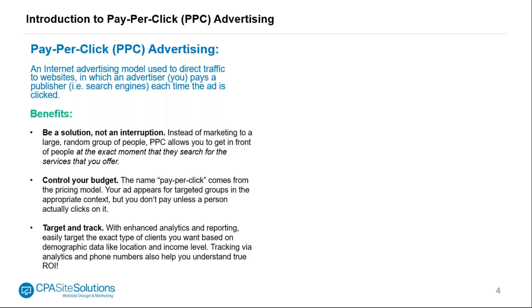Instead of marketing to a large random group of people with traditional marketing, PPC allows you to get in front of people at the exact moment that they search for the services that you offer, so they're paying attention because they're actively searching. You can control your budget — the name pay-per-click comes from the pricing model in which your ad appears for targeted groups in the appropriate context, but you don't pay unless someone actually clicks on it. You can also target and track with enhanced analytics, easily getting the exact type of clients you want based on demographic data like location and income.